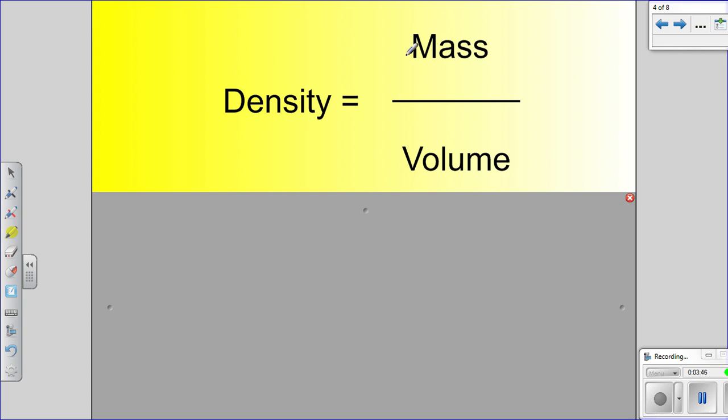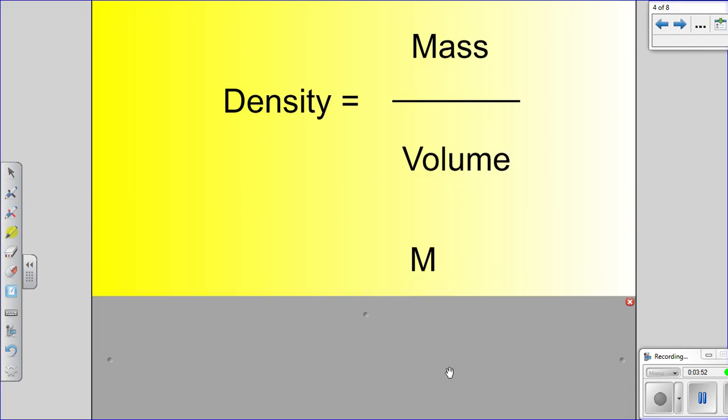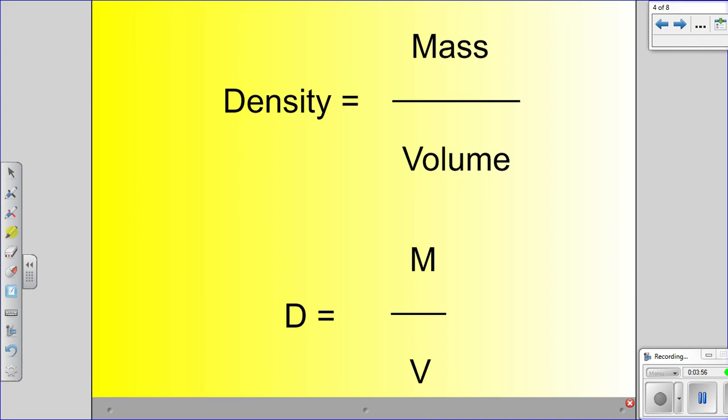So if we have two of these three things, we can calculate what the other third thing is. You may also see it written like this. D equals M over V. Now, this formula is going to be given to you on any test you take and including the star test. But it's also important to remember it. And there's an easy way to remember it.